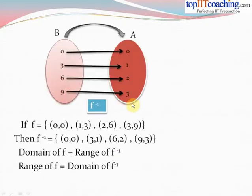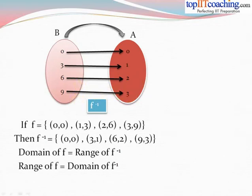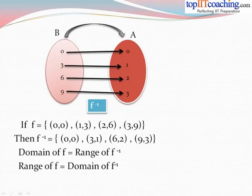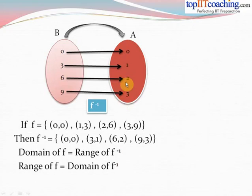So set A has elements {0, 1, 2, 3} and set B has elements {0, 3, 6, 9}, where 0 maps to 0, 1 maps to 3, 2 maps to 6, and 3 maps to 9 — this is function f. For f inverse, we take set B to set A: 0 maps to 0, 3 maps to 1, 6 maps to 2, and 9 maps to 3. So f = {(0,0),(1,3),(2,6),(3,9)} and f inverse = {(0,0),(3,1),(6,2),(9,3)}. We clearly observe that the domain of f equals the range of f inverse, and the range of f equals the domain of f inverse.